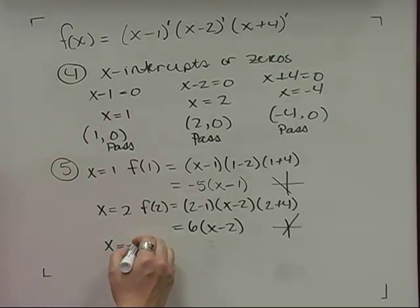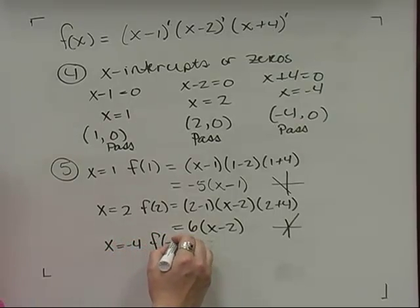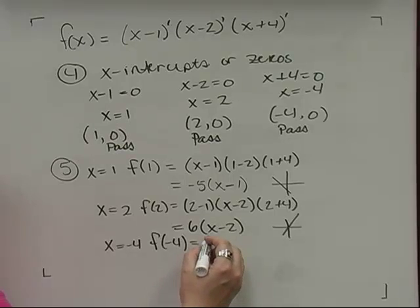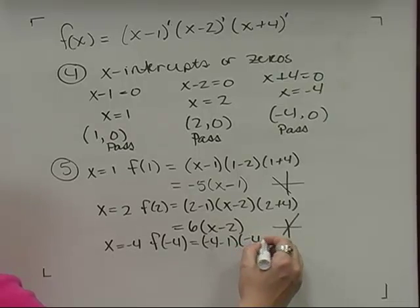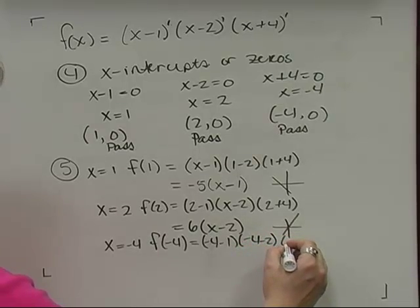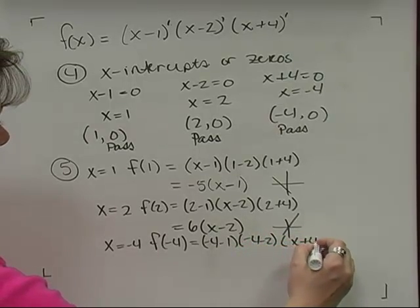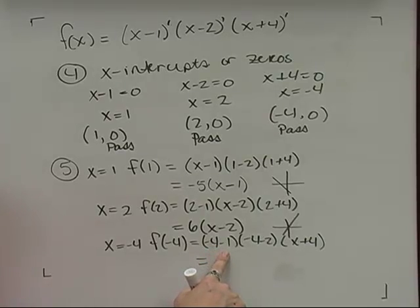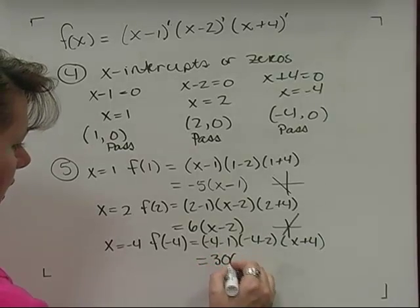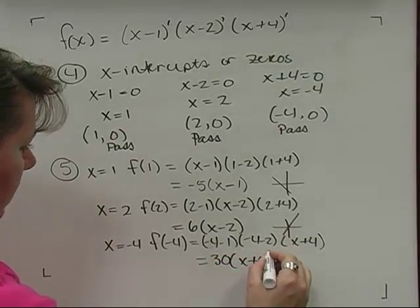For the last zero at x = −4, I substitute −4 into all factors except the third: (−4 − 1)(−4 − 2)(x + 4) = (−5)(−6)(x + 4) = 30(x + 4). This is a linear function with a positive slope of 30, so the graph passes through x = −4 with a positive slope.